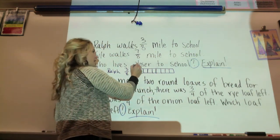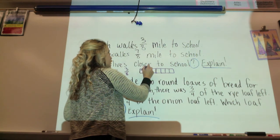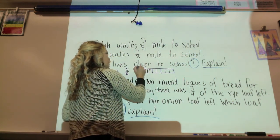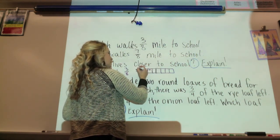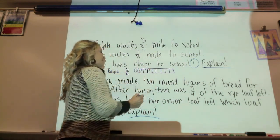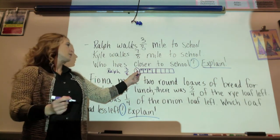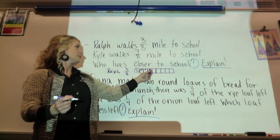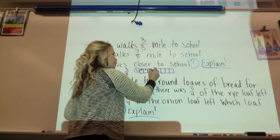So we can say Kyle goes one, two, three. Here's the school. Ralph lives three-eighths of a mile, so here's where Ralph's house is right here, right?